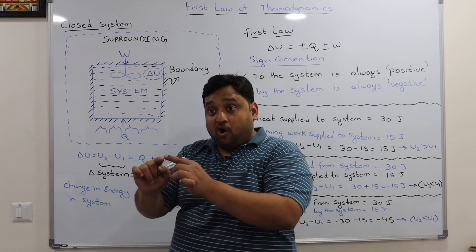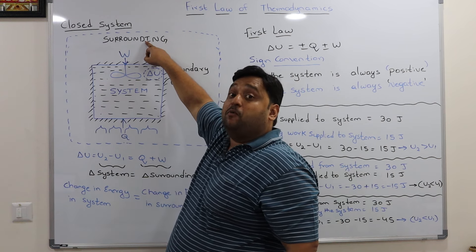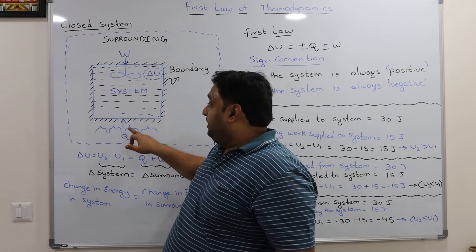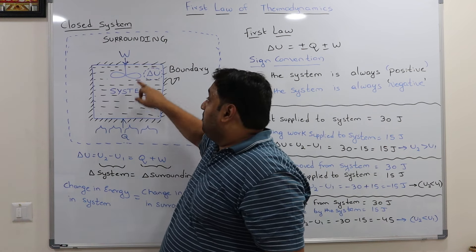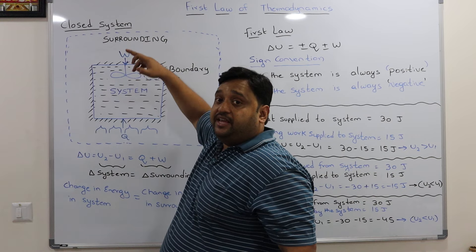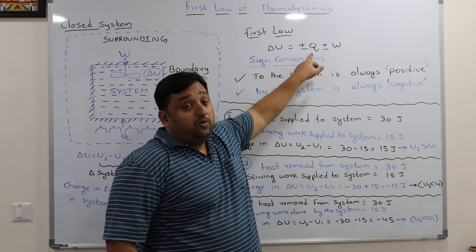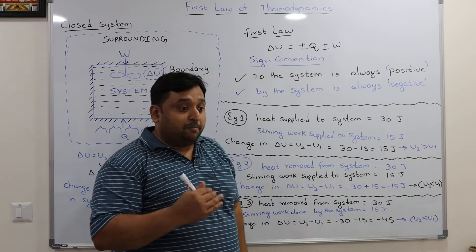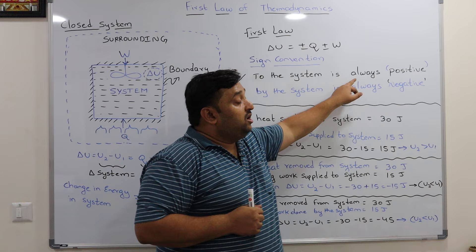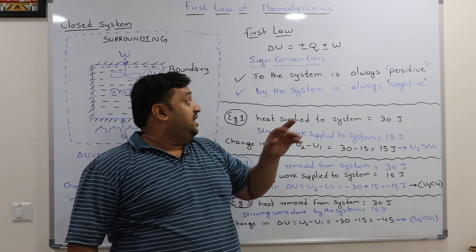In the older sign convention, heat supplied is positive and work extracted is also positive. Recently, this has changed. The modern sign convention is simple: anything supplied to the system — whether heat or work — is positive. If you are removing heat from the system, it is negative. If you are removing work from the system, it is also negative. So the first law becomes delta U = ±Q ± W. Positive is used when supplying anything to the system; negative when removing. If the system does work on the surroundings, that work term is negative.